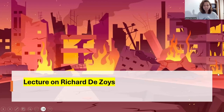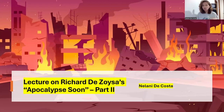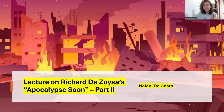Hello, and welcome to the second part of the lecture series on Richard DeSoysa's Apocalypse Zone. In the first part, I mainly go through the background or context to the poem, and if you haven't listened to this, or if you are interested in listening to that part before you listen to this lecture, you can access the link provided to that video.